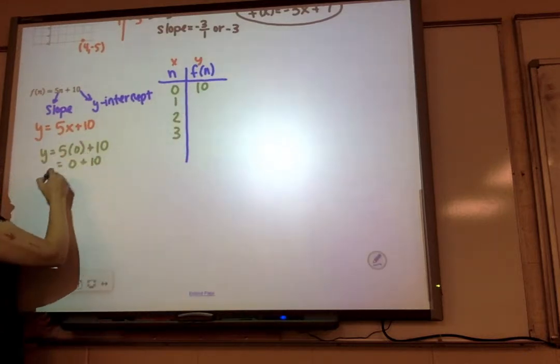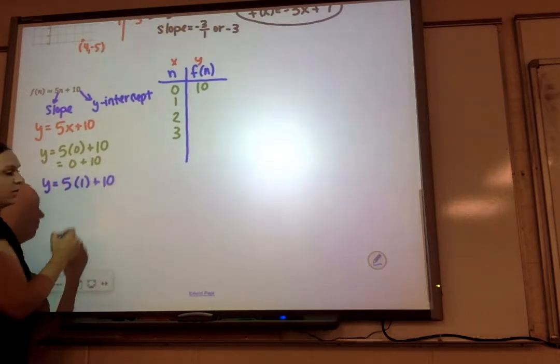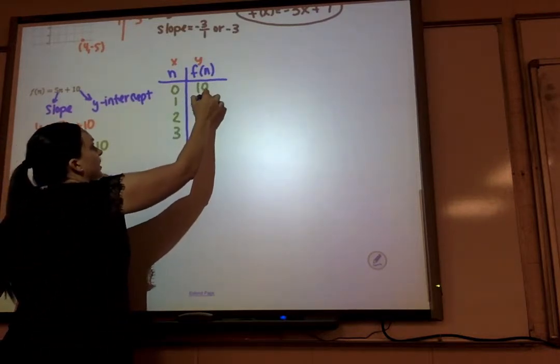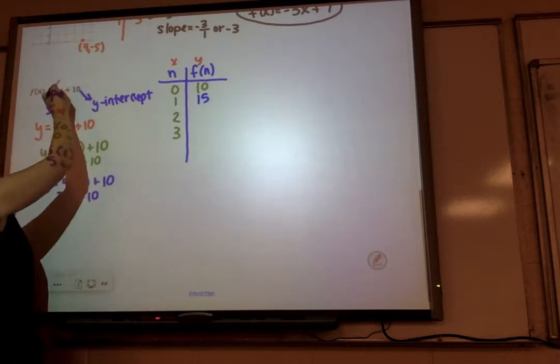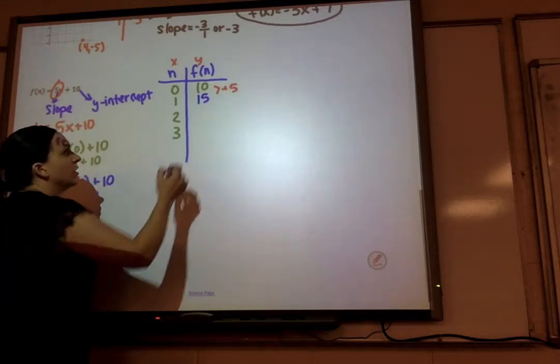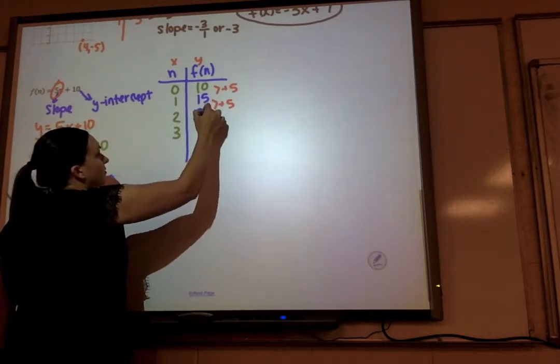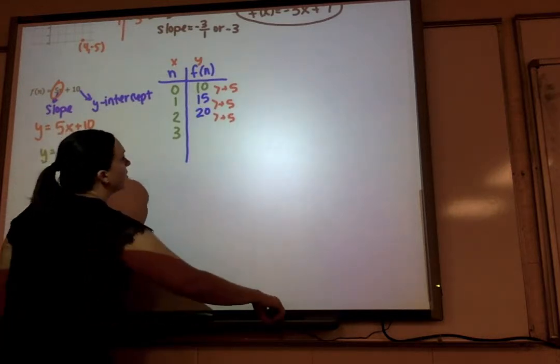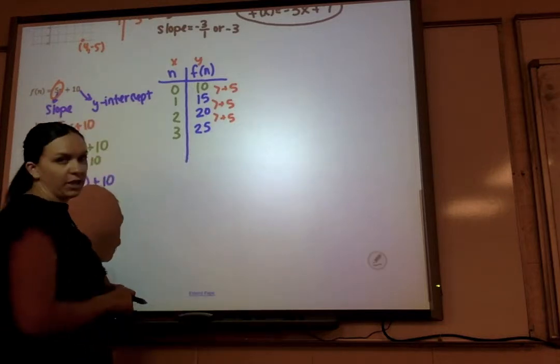Alright, now we're going to change the x to a 1. So 5 times 1 plus 10. 5 plus 10 is 15. And there we see our slope, that's our change, we're adding 5. So 15 plus 5 is 20. 20 plus 5 is 25. So there's our table.